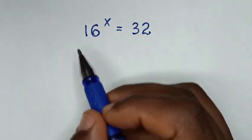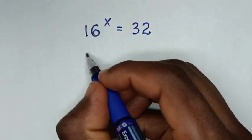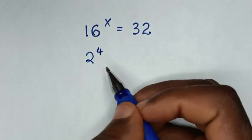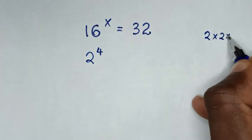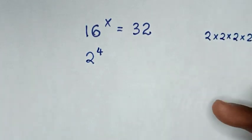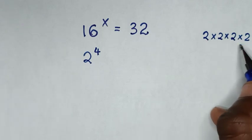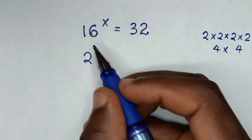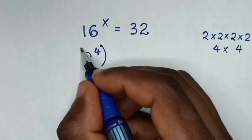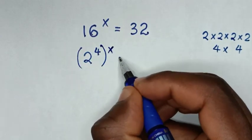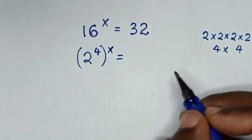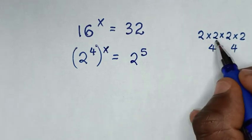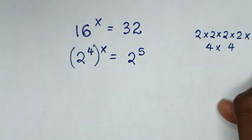In the first step, from this 16, 16 is same as 2 power of 4, as 2 power of 4 is 2 times 2 times 2 times 2, because 2 times 2 is 4, and 4 times 4 is 16. So it will be 2 power of 4 in bracket, power of x, is equal to 32, which is same as 2 power of 5, because it is 2 times 2 times 2 times 2 times 2.